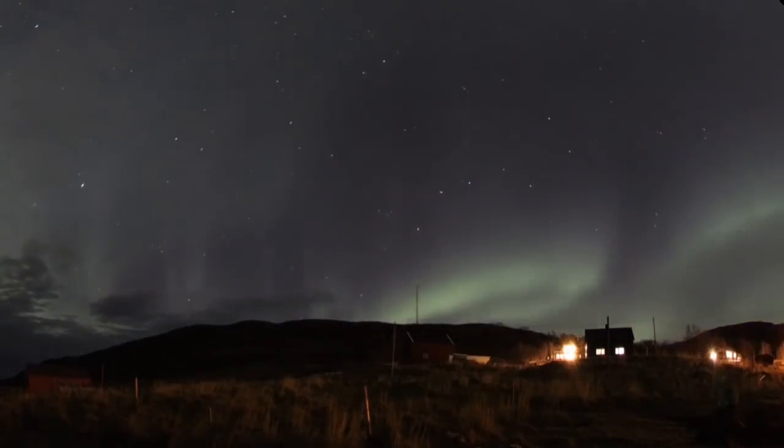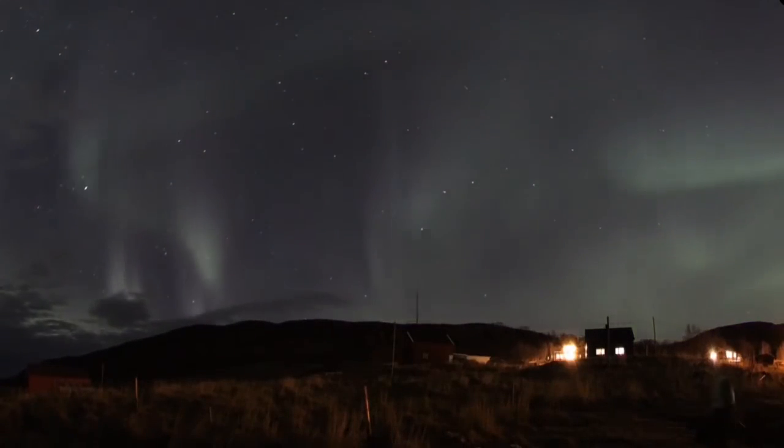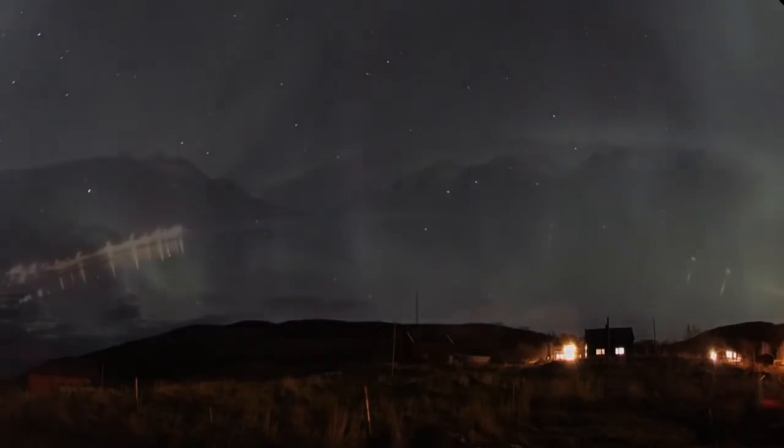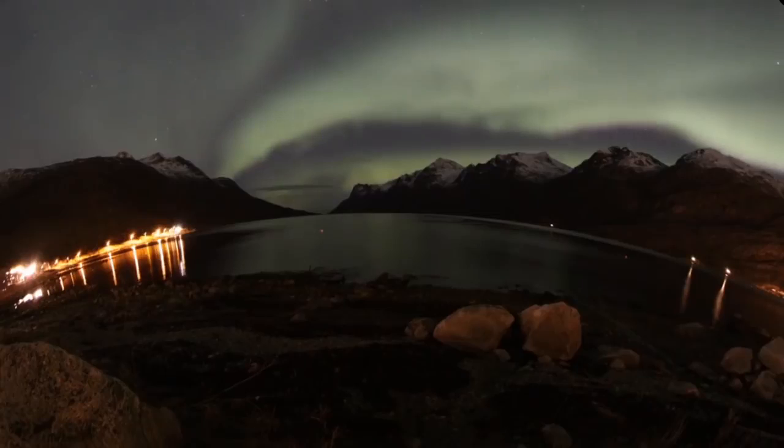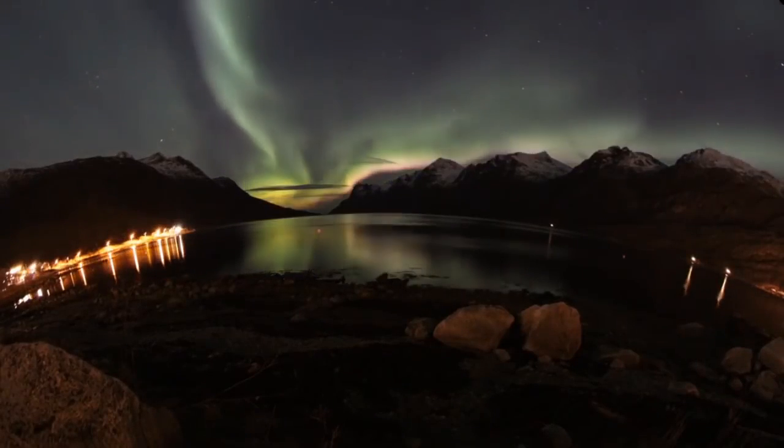Auroras can appear as long, narrow arcs extending overhead from horizon to horizon. From the side, they look like ribbons that kink, fold, and swirl.